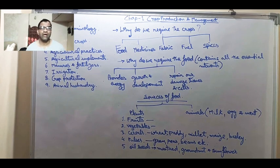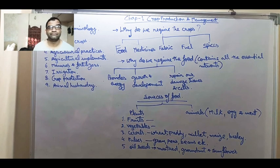Fabric such as cotton fabric and jute fabric. Fuel - we are using wood as a fuel, and we are getting the wood from plants, from trees. Spices means masala - spices also we are getting from the plants like jeera, haldi, dhaniya.